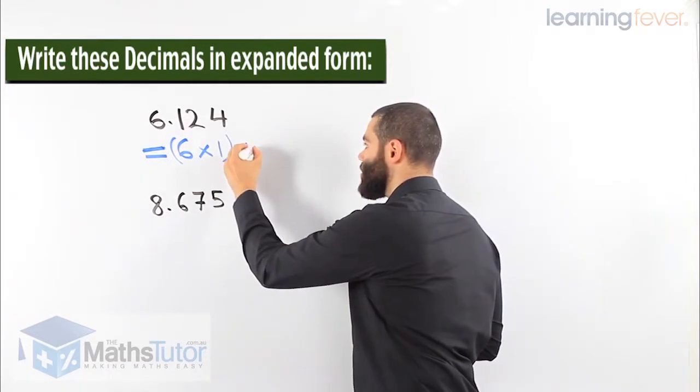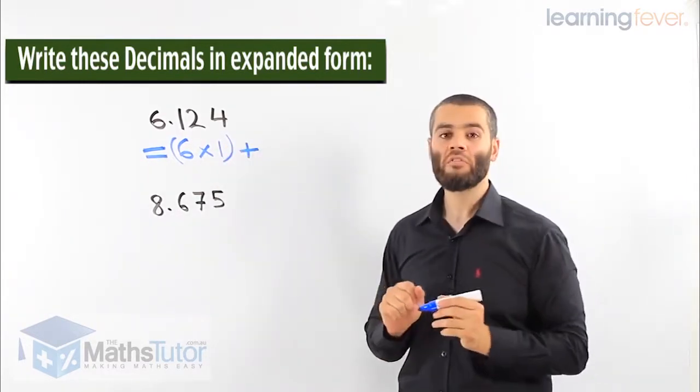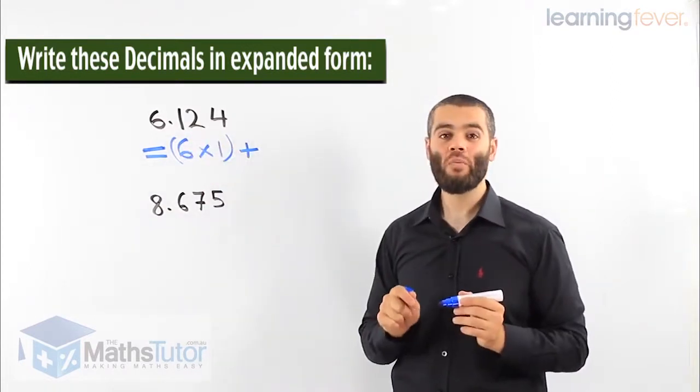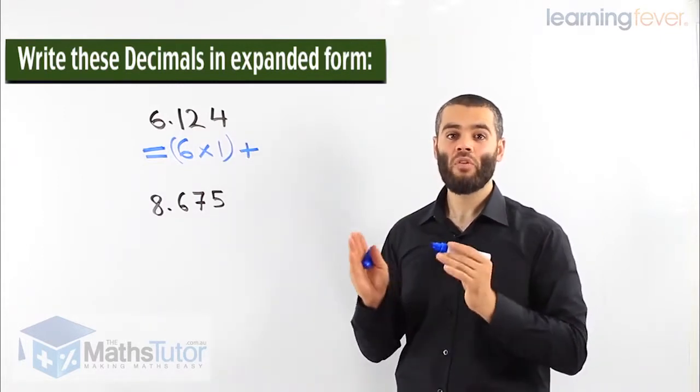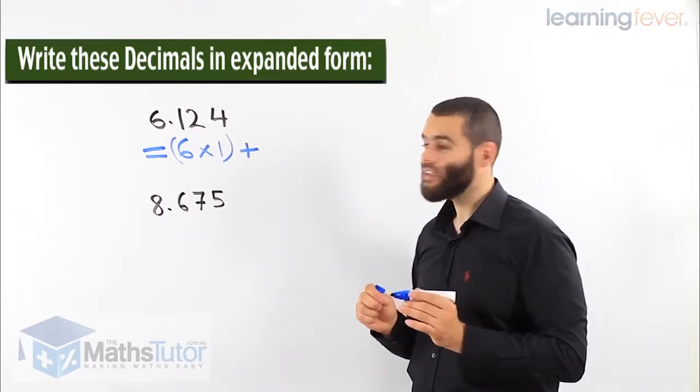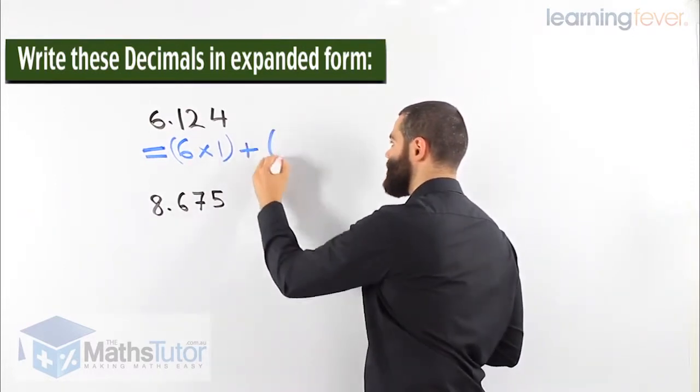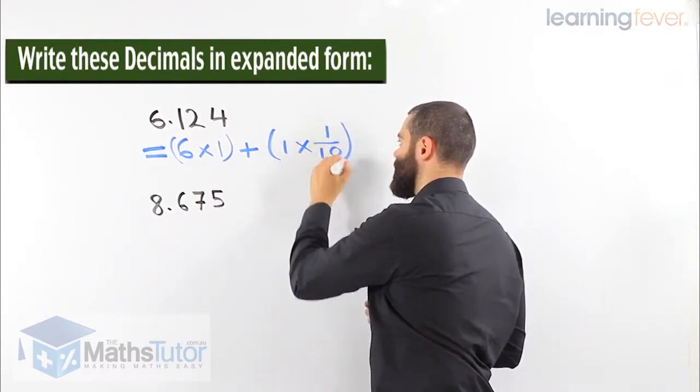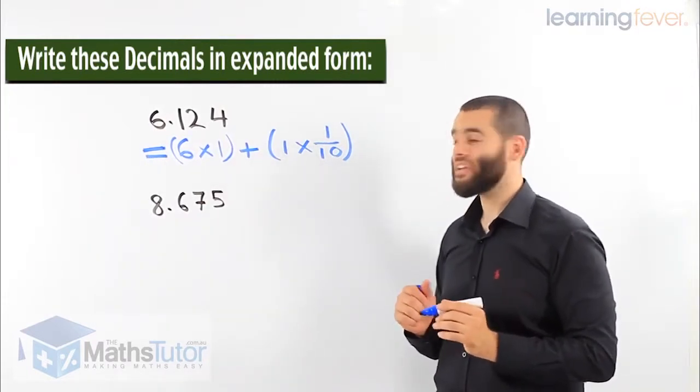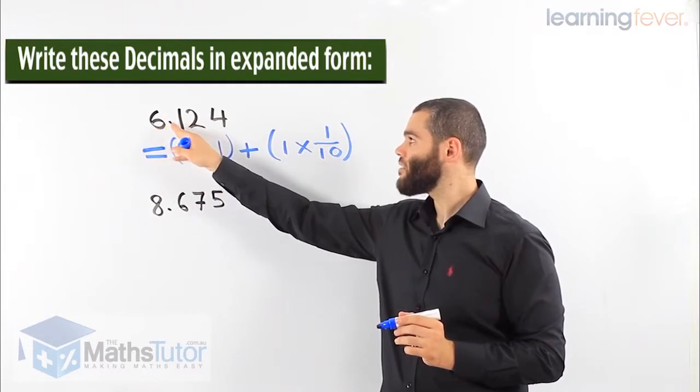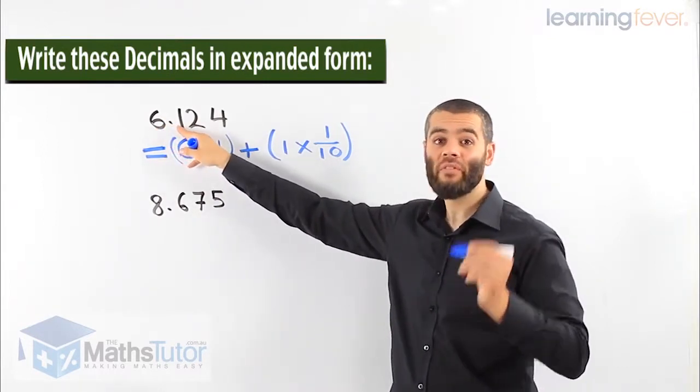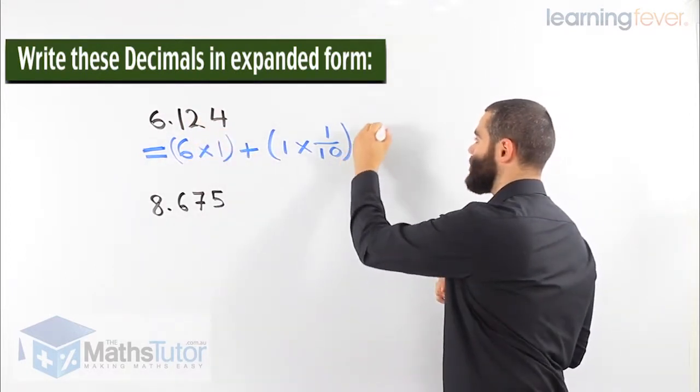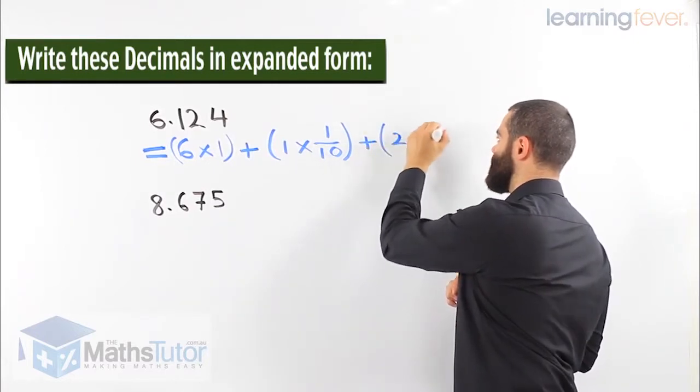Then we realize we have our point. So 6 point. We have 1 and the 1 is straight away, we know the first value after the point is the tenth. So we know 1 times 1/10. Then we look to the next number. After the tenth, straight away we know it goes to a hundredth. So plus 2 times 1/100.